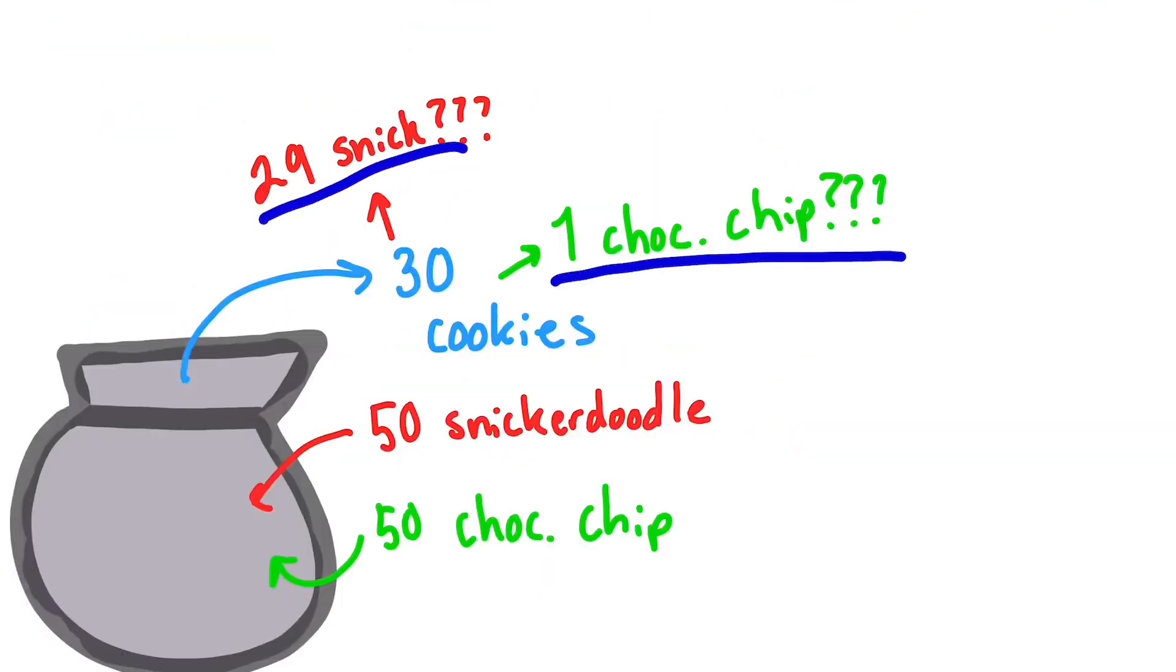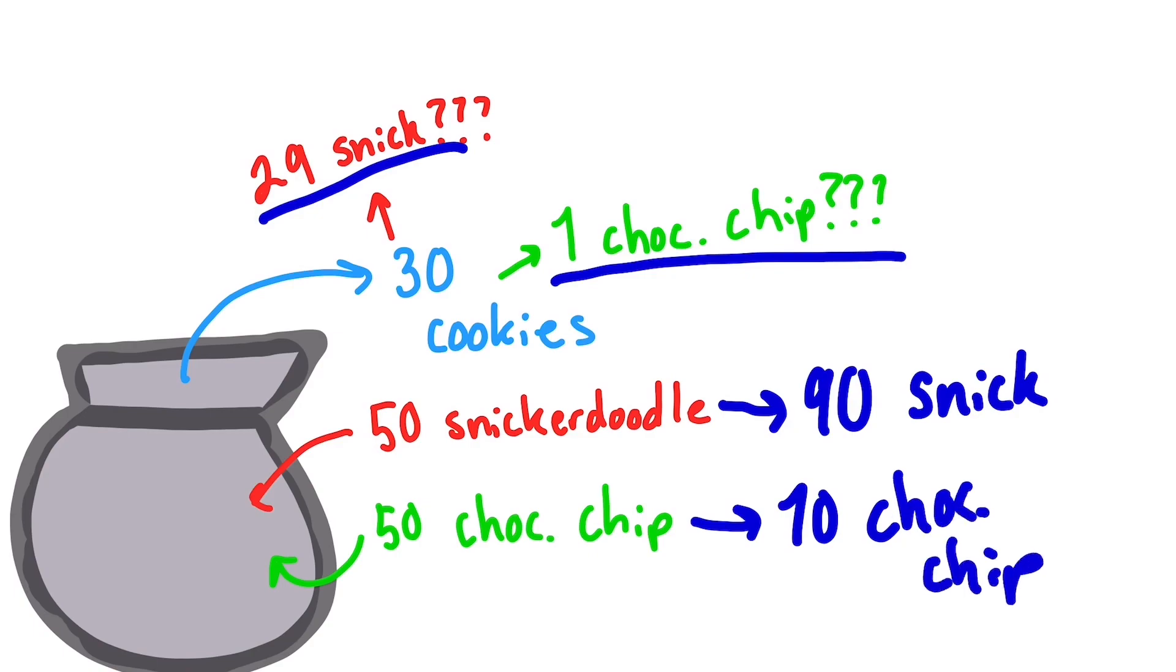So if this happened to my friend, they would probably suspect that something is up. Maybe the bag has 90 snickerdoodle cookies and only 10 chocolate chip ones. Either way, we can use the likelihood of the outcome that we got in order to validate or invalidate the assumptions we made about a system.